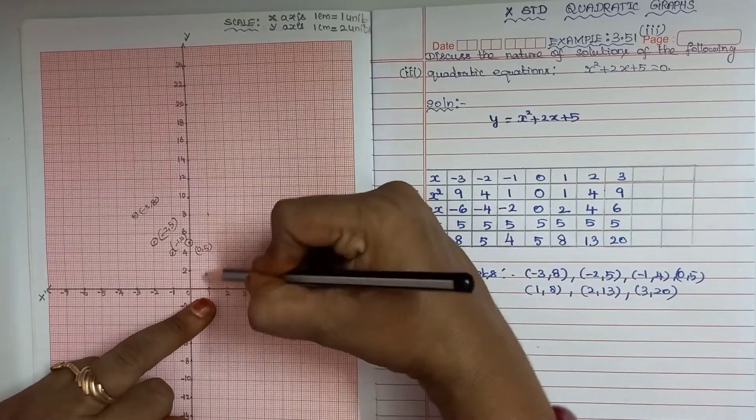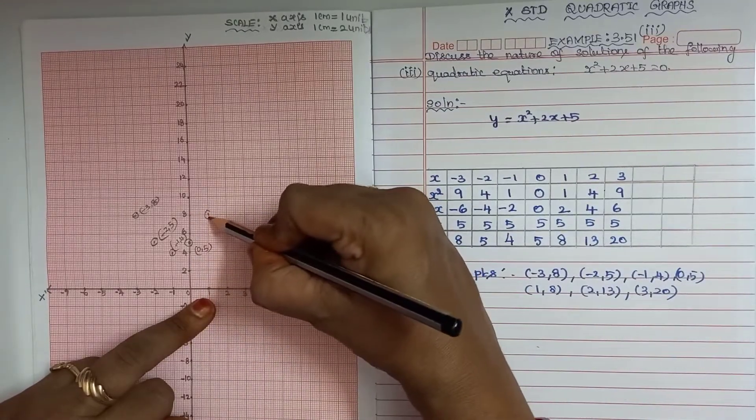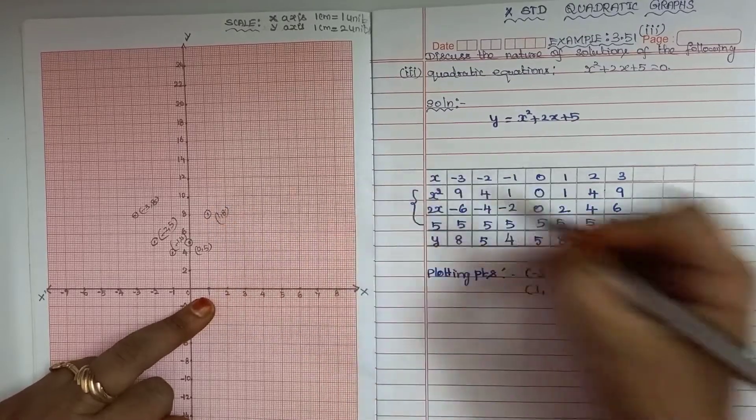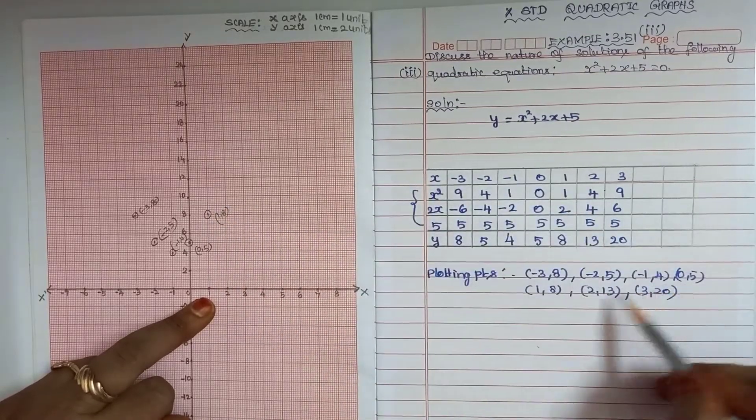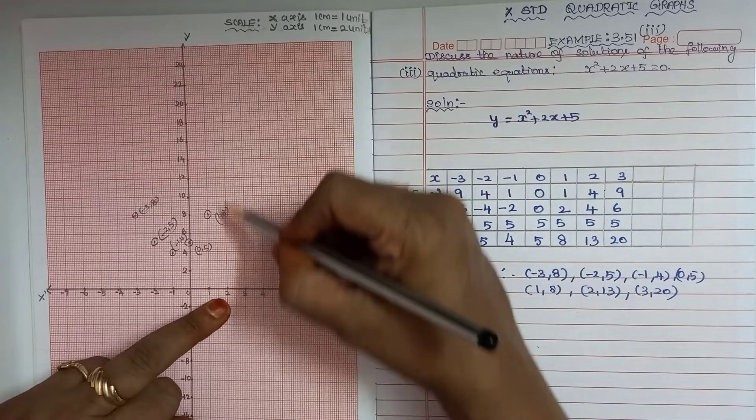Plotting further points: (1, 8), (2, 13).